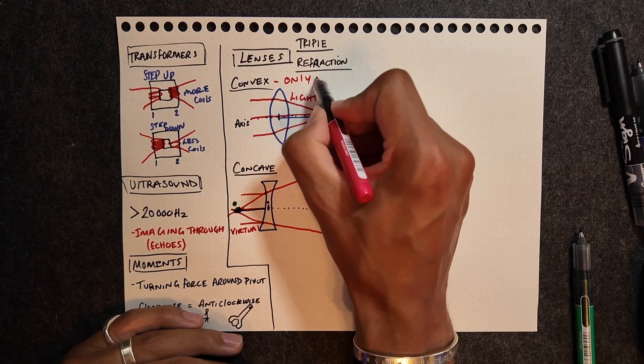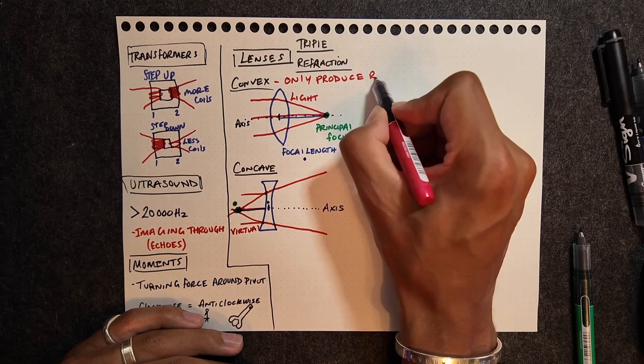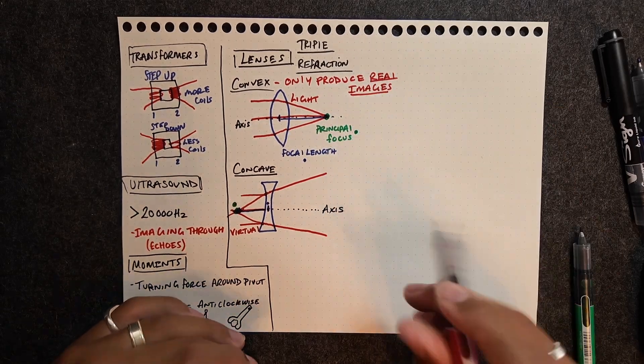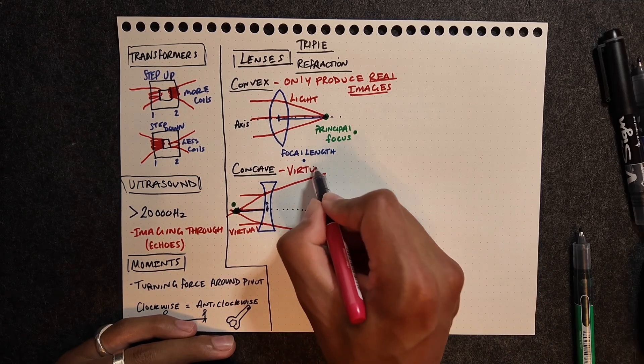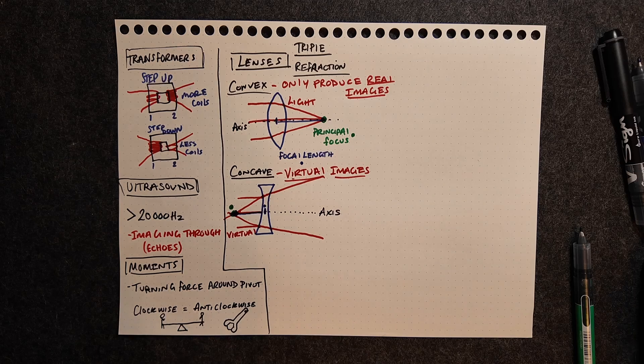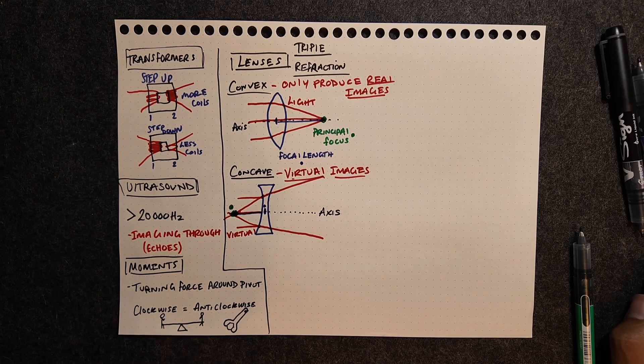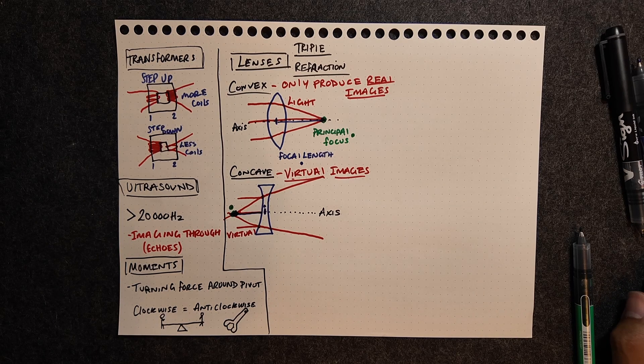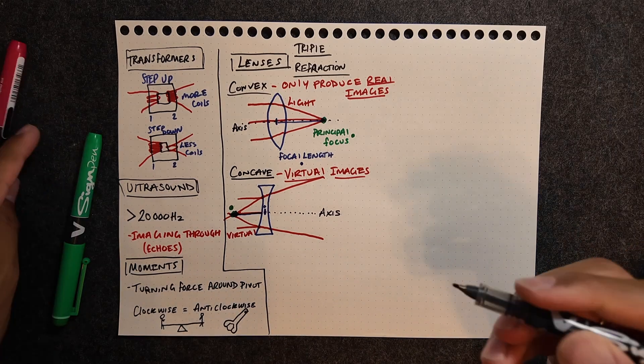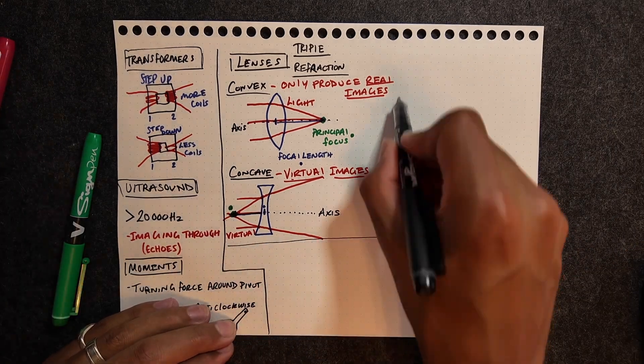A key thing to remember is that convex lenses will only produce real images, and your concave lenses only produce virtual images. Just remember that the focal point is where the light rays meet after passing through the lens. Principal axis is the straight line that goes through the centre of the lens.